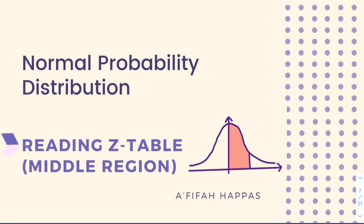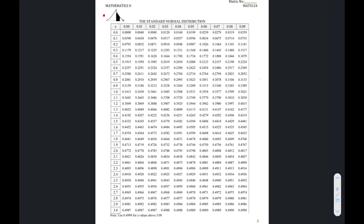In this video I will explain the normal distribution and how to read the z-table. For example, in Maths 2 you will be given the middle region — this part. Sometimes it can also give you the tail part, but in Maths 2 we use the middle part. This is how your table will look: the vertical and horizontal parts indicate the z-value, and the inside part tells you the area under the shaded region, or the probability for the normal distribution.